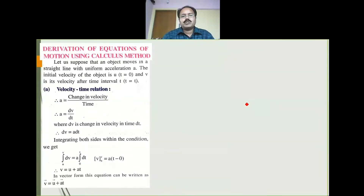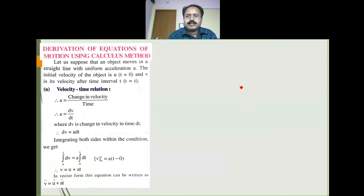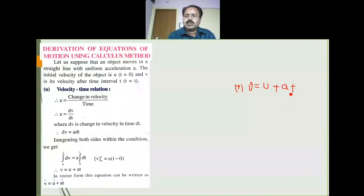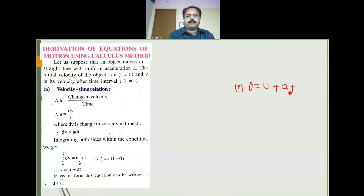Here we have to derive these equations by using the calculus method. The first equation V is equal to U plus AT — U is the initial velocity, V is the final velocity. If the initial velocity, acceleration, and time are known, we can determine the final velocity of the body. Or if the final velocity and initial velocity are given, we can determine the acceleration. This is the first equation.